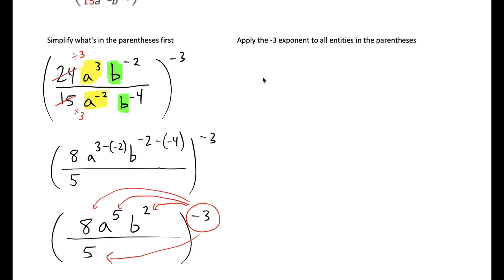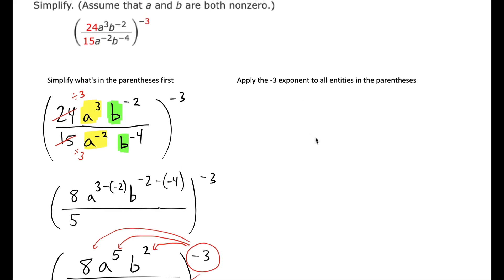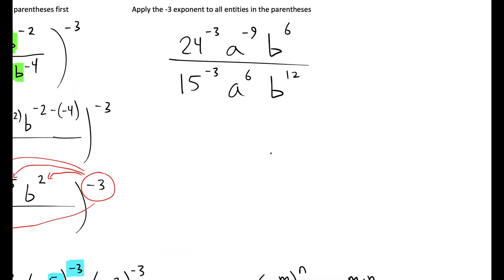The other way would have been to just straight away send that negative 3 to all entities in the parentheses. It should be that no matter how you do it, you get the same answer. So we would have had 24 to the negative 3, A to the negative 9, B to the 6, 15 to the negative 3, A to the 6, B to the 12. And then you'd just go from there.